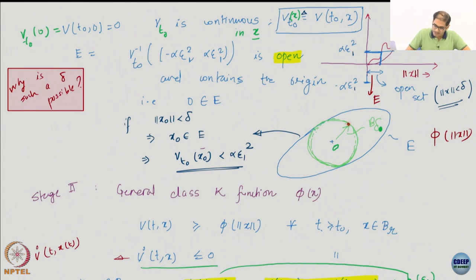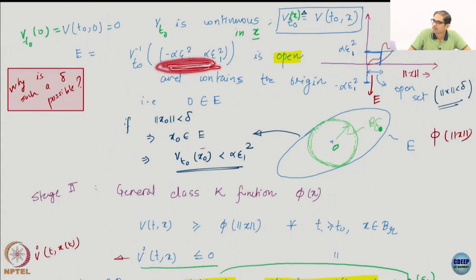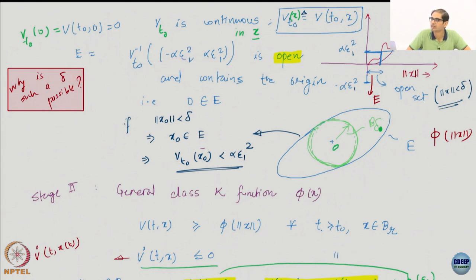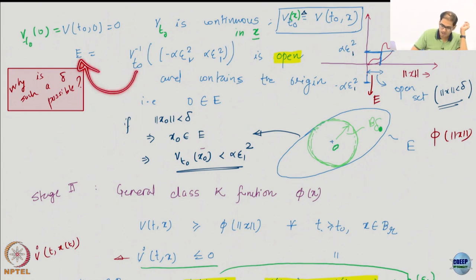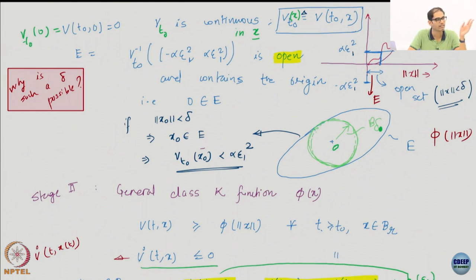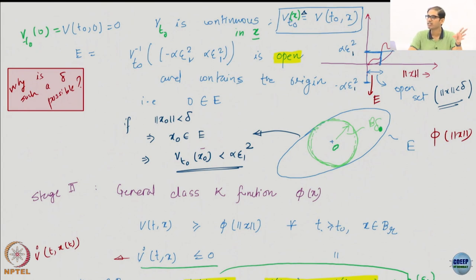Whenever x0 is less than delta — whenever I am inside this ball — I am inside the E set. And if I am inside the E set, v_t0 can map me only inside this value range. Because if I take this to the other side, v_t0 of E has to lie within this range. So I have just proven that if norm(x0) is less than delta, v_t0 is always less than alpha * epsilon_1 squared.